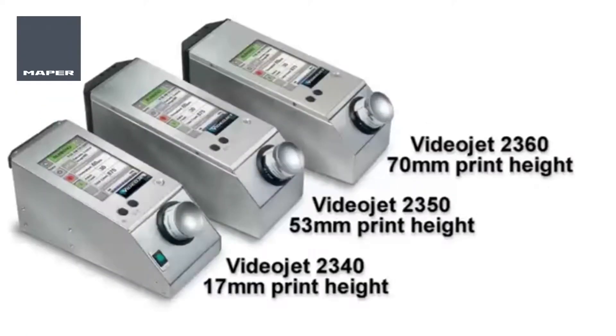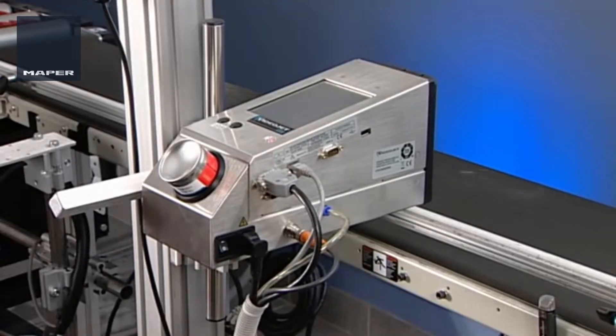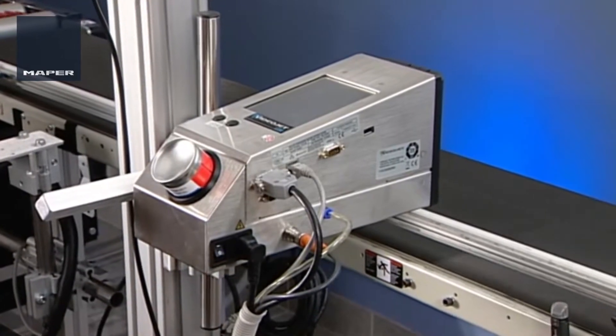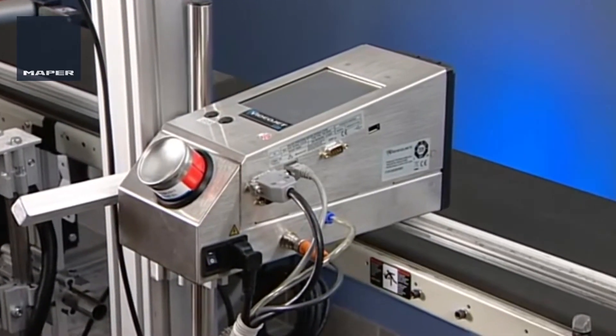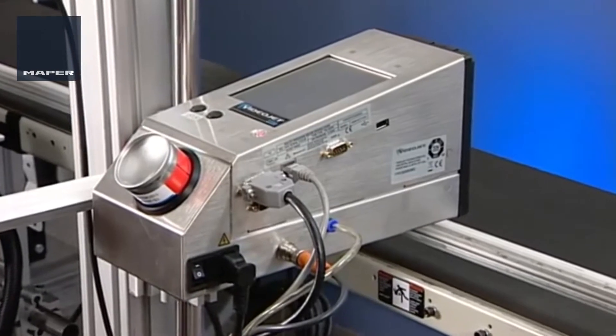VideoJet 2300 Large Character Inkjet Printer: Ease of Integration and Use. The VideoJet 2300 Family has the right printer for your application. Each VideoJet 2300 printer consists of a single compact unit that takes up minimal space on your production line.